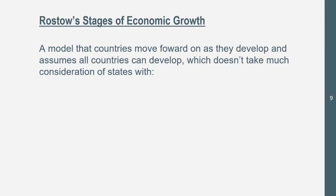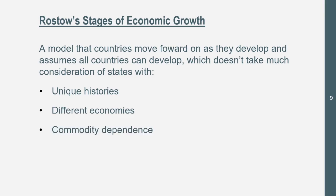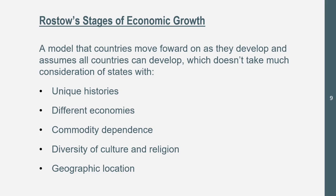Now let's move to the last theory: Rostow's Stages of Economic Growth. This is a model that countries move forward on as they develop, and it assumes all countries will develop and always move forward. However, it doesn't account for states with unique histories, different economies, commodity dependence, diversity of cultural religion, geographic location, climates, or interdependency between countries — where sometimes multiple countries develop together, or large regions of a country develop at different times.